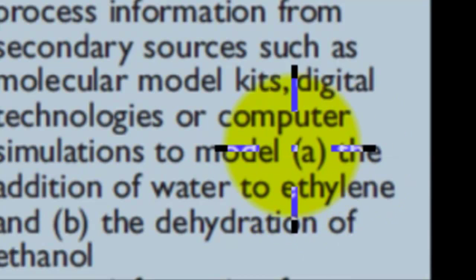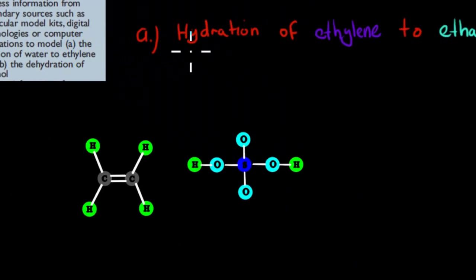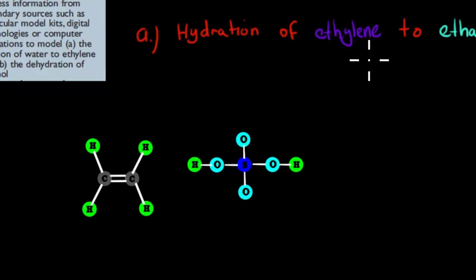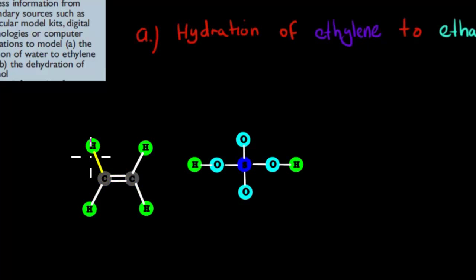First we will do part A — the addition of water to ethylene. So here in the simulation, the purple part represents ethylene. It has two carbons connected by a double bond and four hydrogens coming off it.